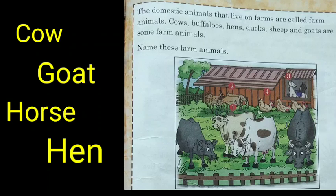Now name these farm animals. Can you see the numbers 1 to 4 on the animals? Number 1 — it is a cow. Number 2 — it is a goat. Number 3 — can anyone tell me? It is a horse. Do you all like horse riding? Number 4 is hens. Hens, goat, and cow are found in many homes.